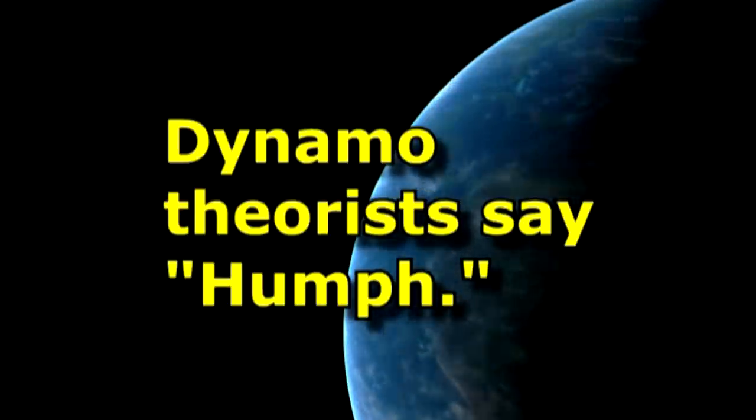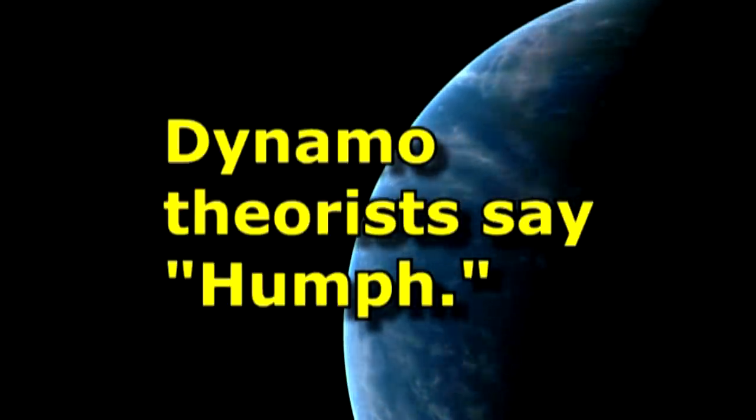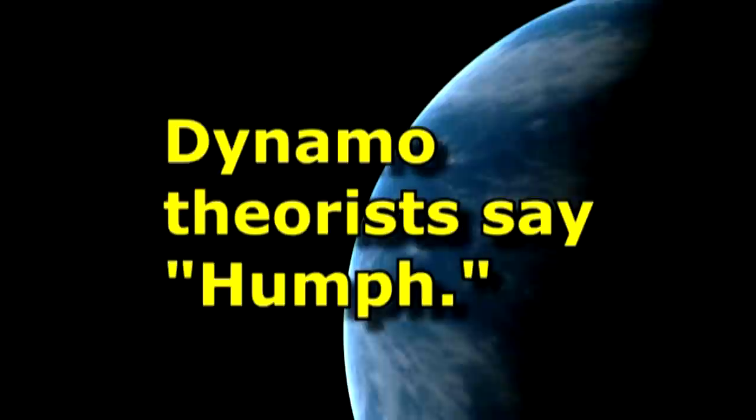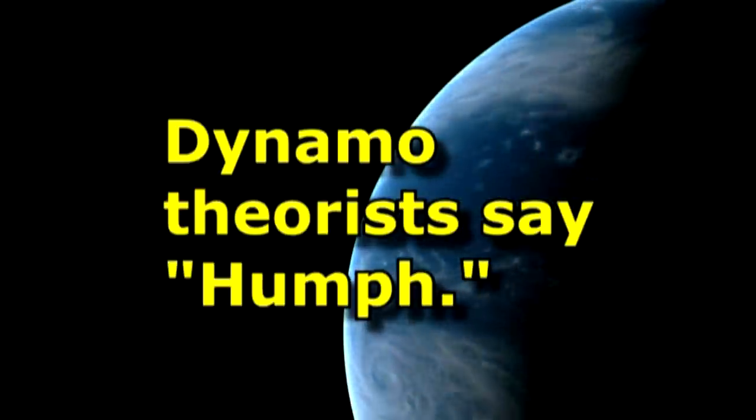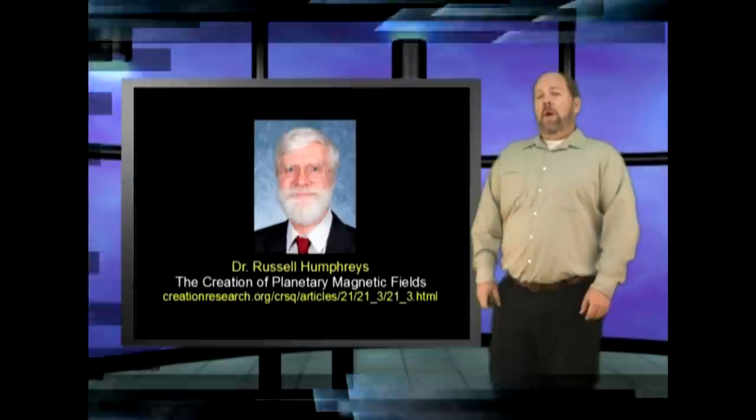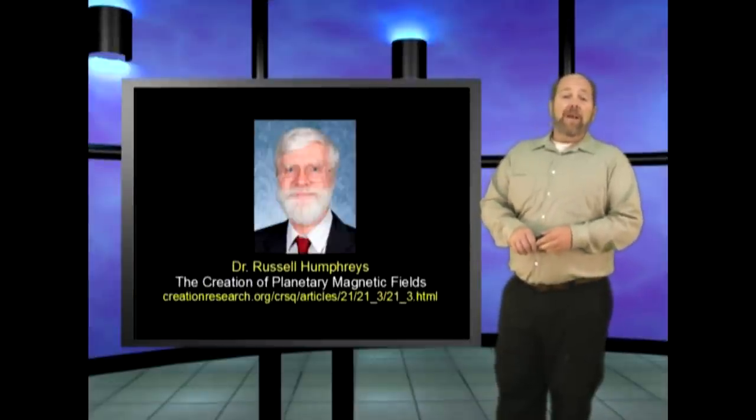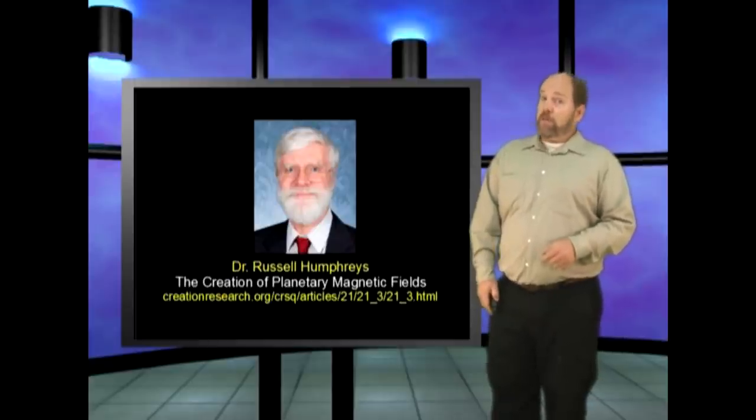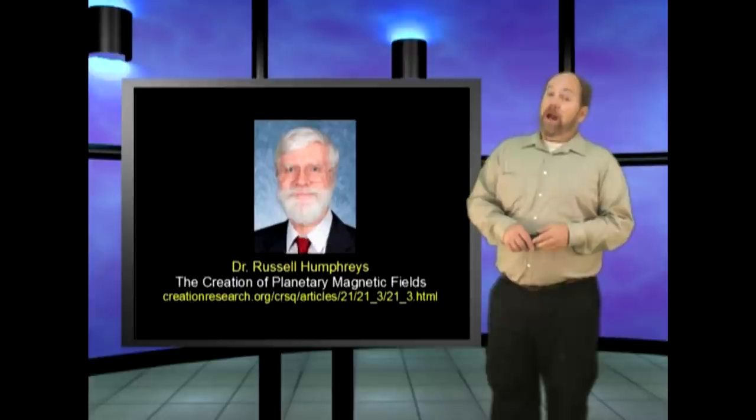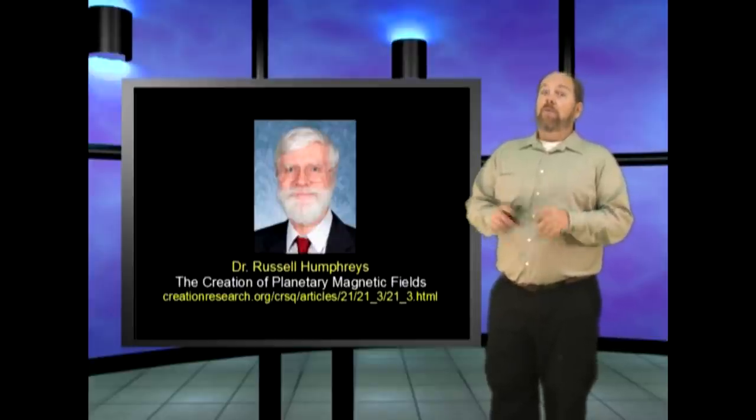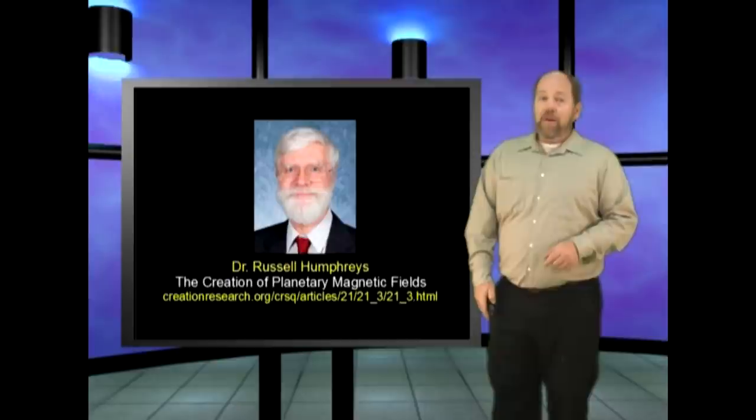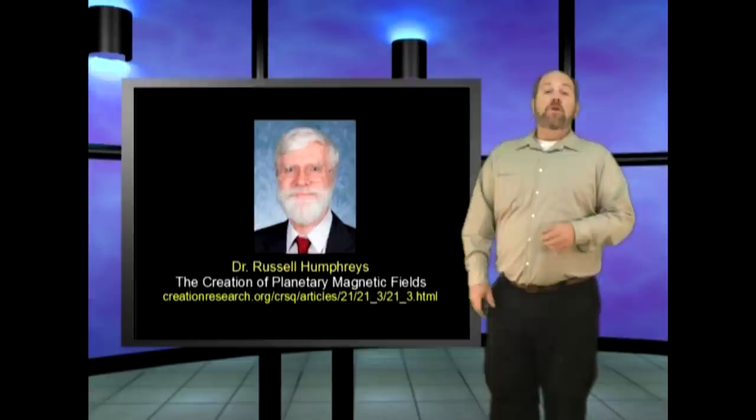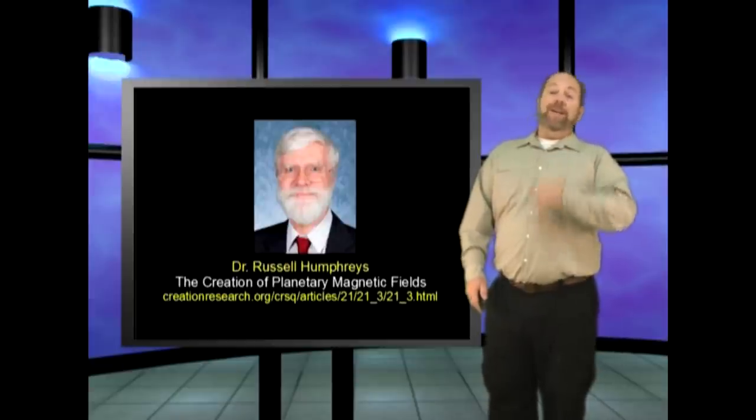And more out of this world news, Dr. Russ Humphreys is at it again! Dr. Humphreys had made multiple predictions regarding the magnetic fields of planets in our solar system, based on the Young Creation model. Publishing six predictions in 1984 in the journal Creation Research Society Quarterly, five out of six of his predictions have now been fulfilled, while the evolutionary models all failed to explain the magnetic fields they measured. We will find out about Humphreys' sixth prediction in 2015, when the New Horizons spacecraft finally reaches Pluto.